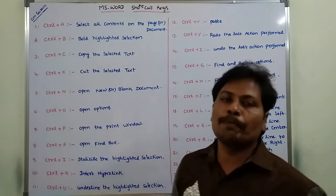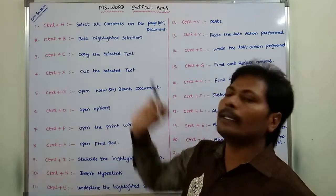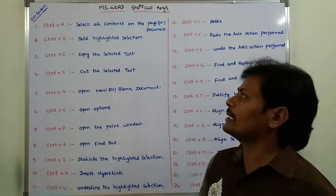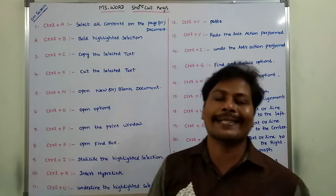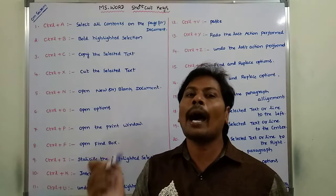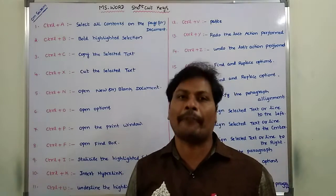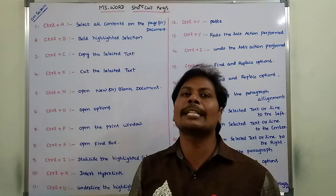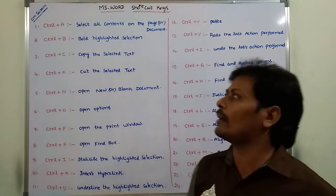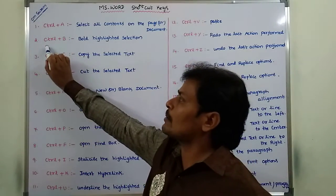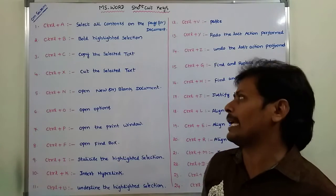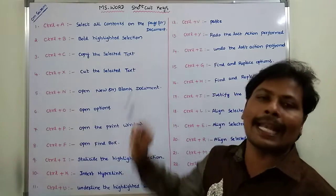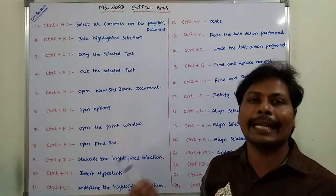Next one is Ctrl plus B. This command is used to bold the highlighted selected text. Whatever text we select, that text will be displayed in bold fashion — meaning the information is displayed in thick letters. For that purpose, we have to use Ctrl plus B.